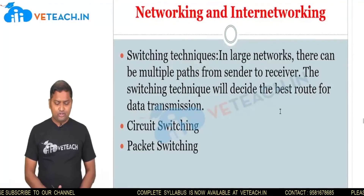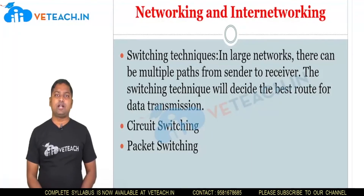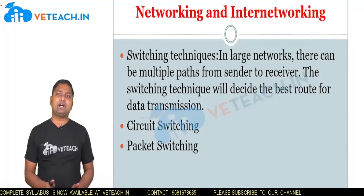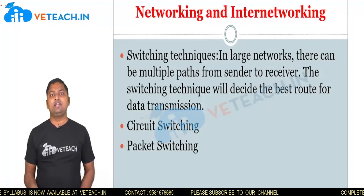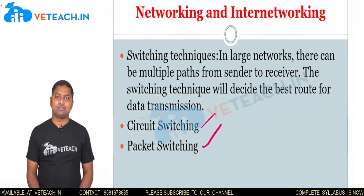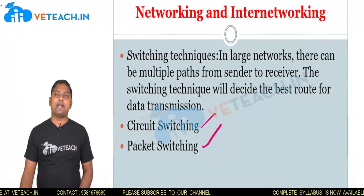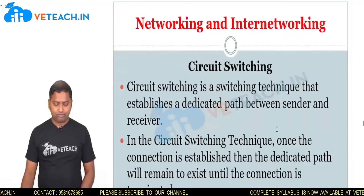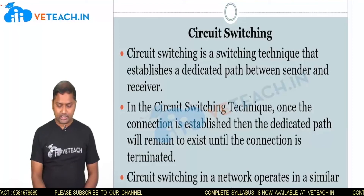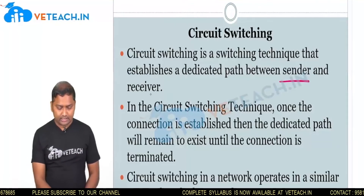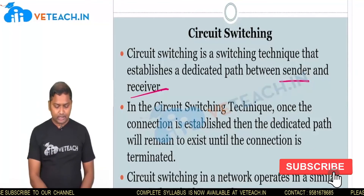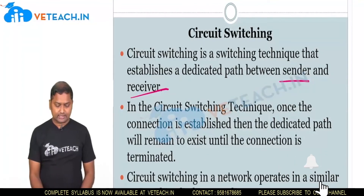When sending this data, you are using switching concepts — switching techniques. When using this large network, multiple paths are established from sender side to receiver side. There are two types: circuit switching and packet switching. In circuit switching, it establishes a connection or path between sender and receiver. Once the connection is established, the dedicated path will remain to exist until the connection is terminated.